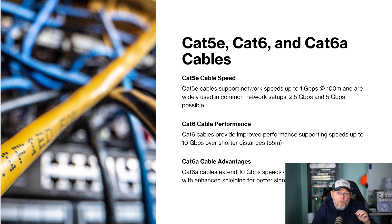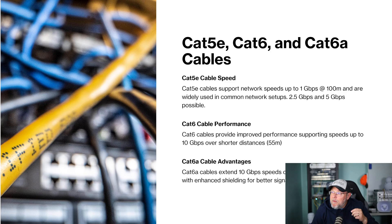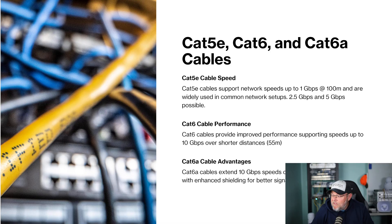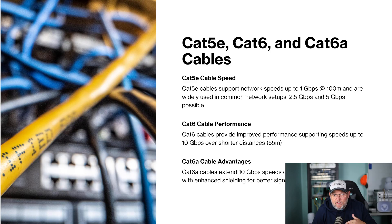Cat5e at this point is going to be your least expensive, and you can get speeds up to one gigabit per second at 100 meters — and 2.5 gig and five gigabit as well. Multi-gigabit is possible on Cat5e. A lot of companies aren't rerunning their cabling; they are changing their NICs and switches to support those multi-gig speeds and getting more life out of that infrastructure.